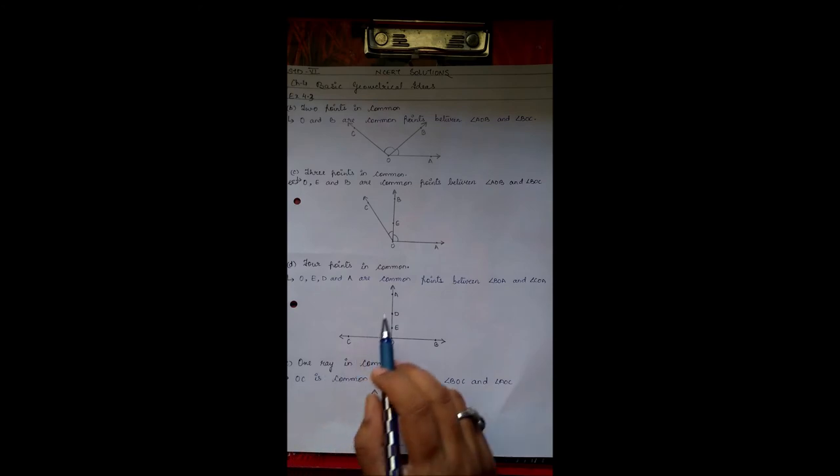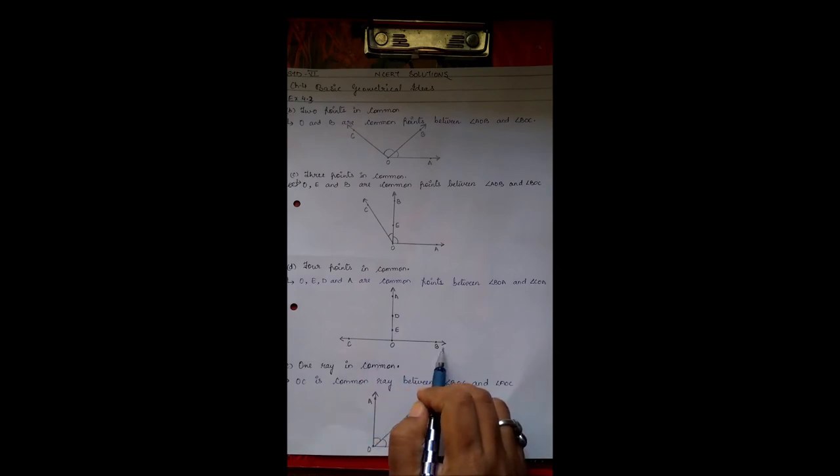Four points in common. This is the perpendicular ADEOCB. So common points are O, E, D, A in both the angles. One ray in common: So OC is the common ray between angle BOC and AOC.